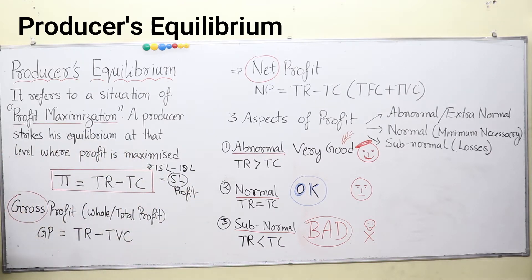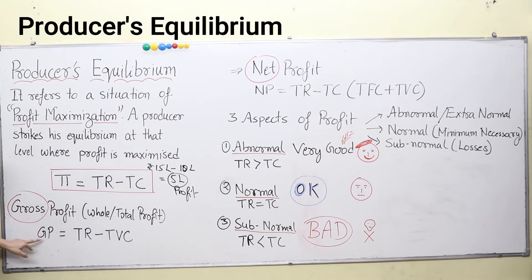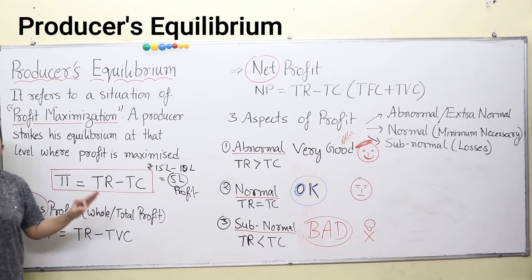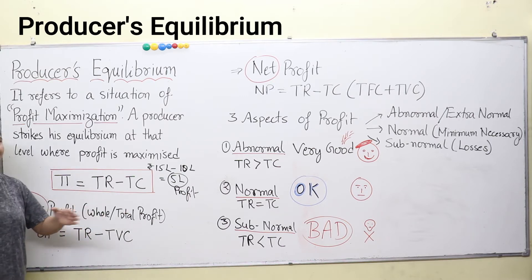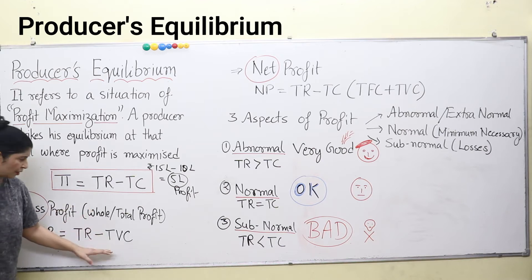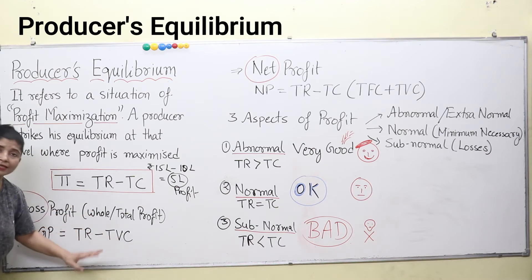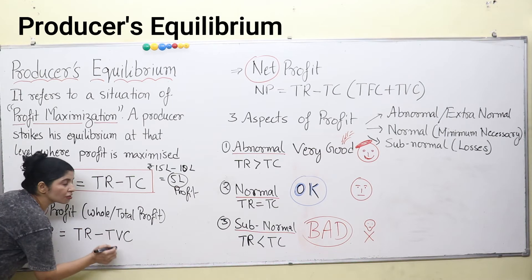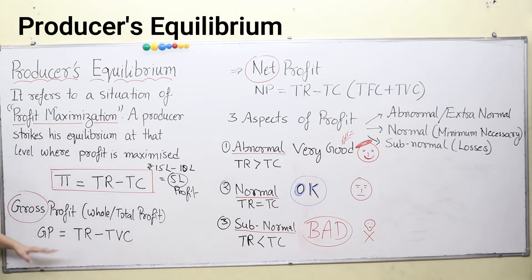Now we will differentiate between gross profit and net profit. Gross profit means the total profit — whatever total profit a producer earns after selling his product in the market. Gross profit is equal to total revenue minus total variable cost. Variable cost includes the cost of raw material, the cost of labor, and other inputs used in production. Total variable cost is the cost of variable factors of production that keep on changing on a day-to-day basis, and it does not include the cost of capital inputs.